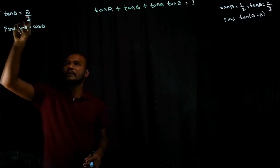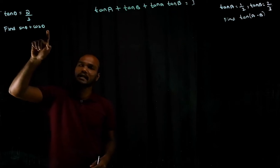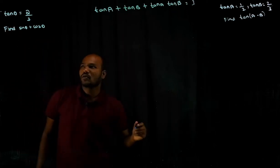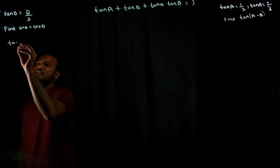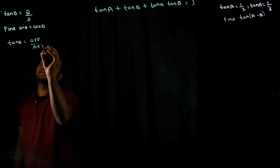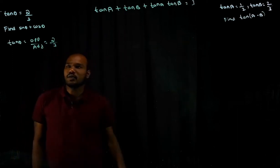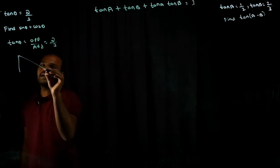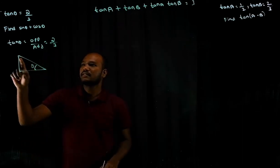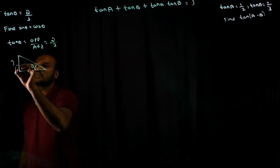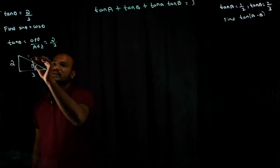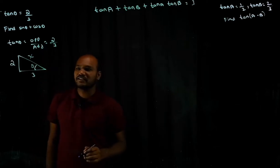So what is given: tan theta equal to 2 by 3, find sine theta plus cos theta. Tan theta is given, we have to find sine theta and cos theta. We know that tan theta is opposite by adjacent, that is given as 2 over 3. So let's write down a right angle triangle — the opposite is 2 and the adjacent is 3. Now what we don't know is X, the hypotenuse. Let's find the X value.